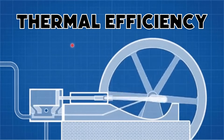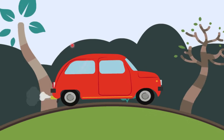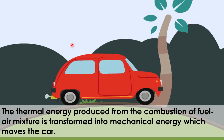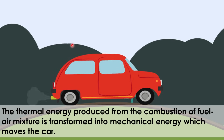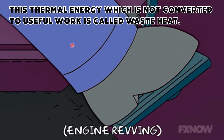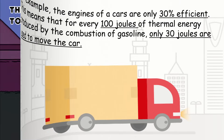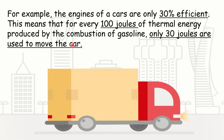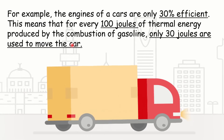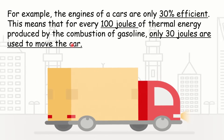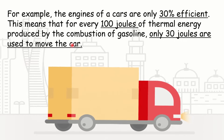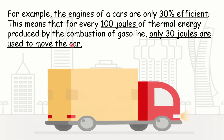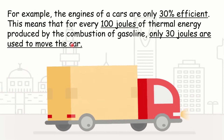Now let's talk about thermal efficiency. The thermal energy produced from the combustion of the fuel-air mixture is transformed into mechanical energy which moves the car. However, not all thermal energy is converted into useful work — this thermal energy which is not converted to useful work is called waste heat. These heat losses are unavoidable and greatly limit the efficiency of heat engines. For example, the engines of cars are only 30% efficient, meaning that for every 100 joules of thermal energy produced by the combustion of gasoline, only 30 joules are used to actually move the car. Therefore, it is impossible to construct a heat engine that is 100% efficient.